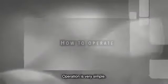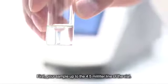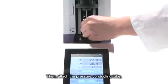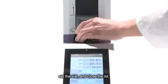Operation is very simple. First, pour sample up to the 4.5 milliliter line of the vial. Then, attach the pressure conducting tube, set the vial and close the lid.